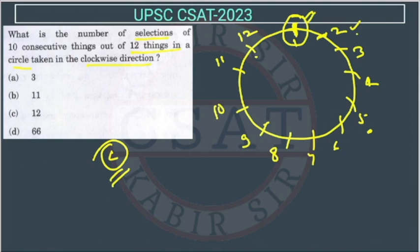So the total number of cases will be 12 only. If we start from 1, we can select 10 things. If we start from 2, we can also select 10 things till 11. If we start from 3, we can select in this way. If we start from 4, we will select 10 things. So how many selections will be there? There will be only total 12 selections. So the answer is 12, option C.